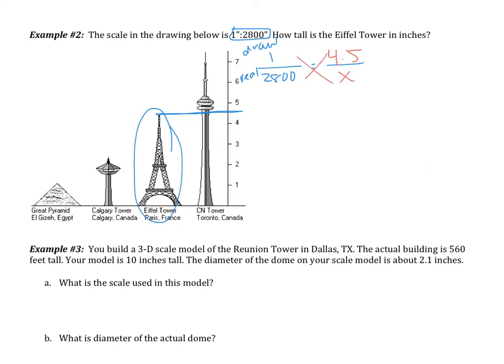Now I just do the cross products property. X multiplied by 1 is just X. And then 2,800 multiplied by 4.5 is 12,600 inches. So the Eiffel Tower is about 12,600 inches. If I divide that by 12, that tells me that the Eiffel Tower is about 1,050 feet. So with scale drawings, you're going to be setting up a proportion and solving it.